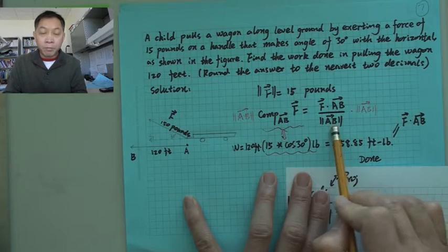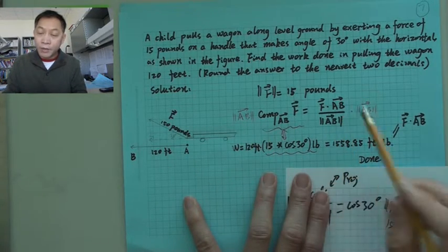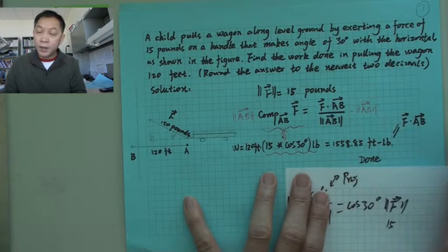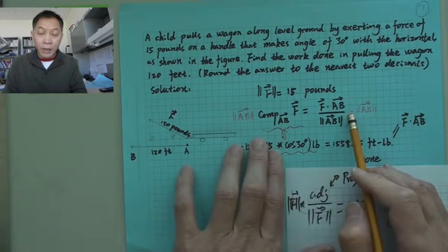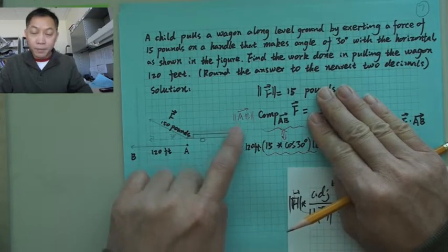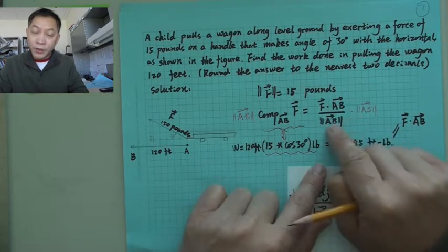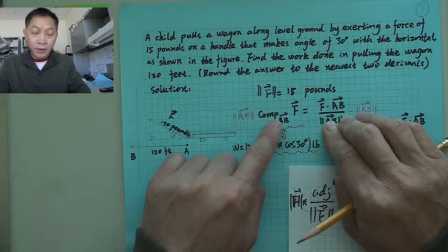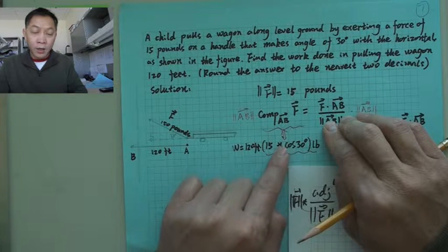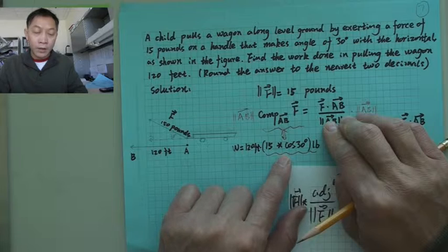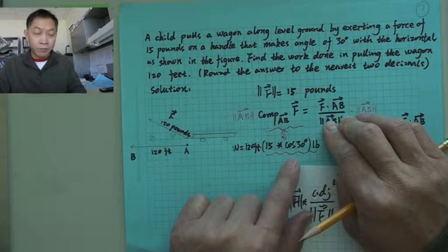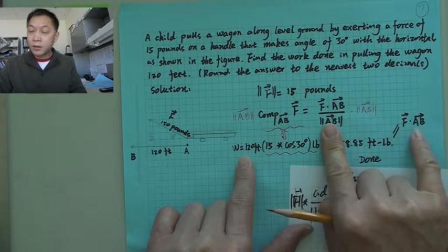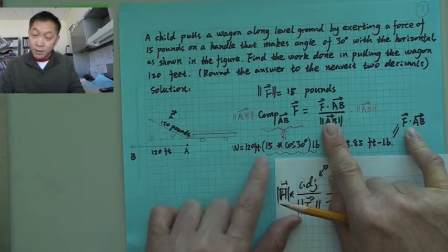We can also verify using the dot product formula. F dot AB equals the length of AB times the projection of F onto AB — cancelling the magnitude of AB from both sides. So it's the length of AB (120) times the horizontal projection of F. The dot product in physics gives the amount of work.